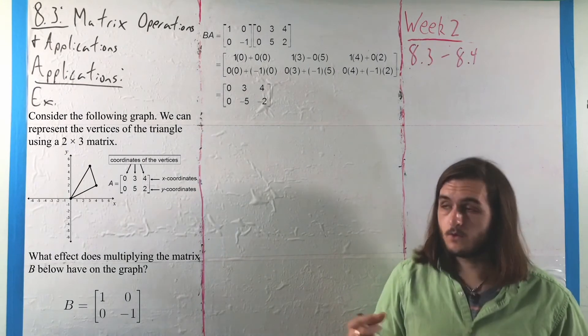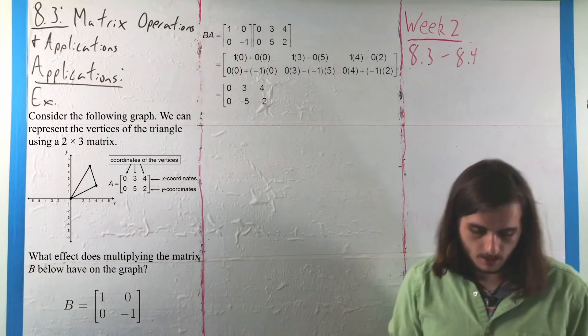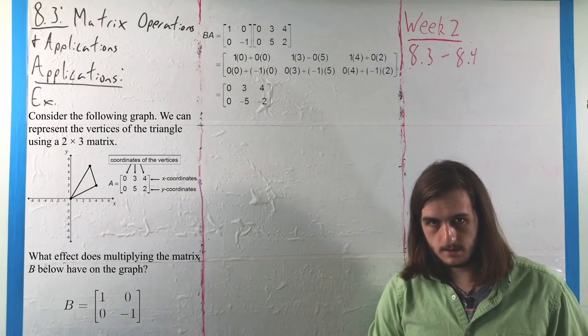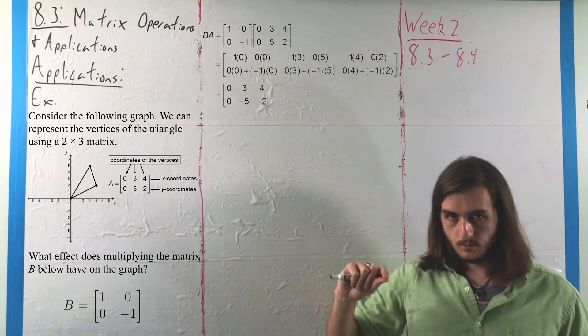And thinking about that in terms of coordinates, we can see that the point at the origin wasn't adjusted, but for each of the other two points, the y value was flipped over.